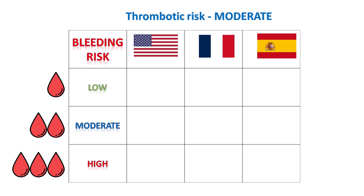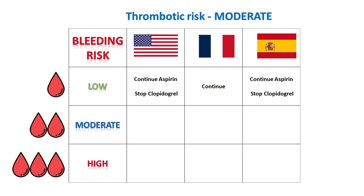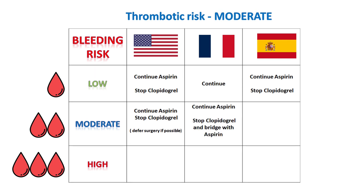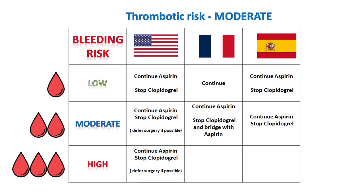In moderate thrombotic risk patients on aspirin or clopidogrel monotherapy for secondary prevention: in low bleeding risk, American suggests continuing aspirin and stopping clopidogrel; French says continue aspirin or clopidogrel as monotherapy; Spanish says continue aspirin but stop clopidogrel. In high bleeding risk, Americans suggest continuing aspirin, stopping clopidogrel, and deferring surgery if possible. The French protocol says continue aspirin, and if the patient is on clopidogrel monotherapy, stop it and bridge with aspirin. The Spanish protocol suggests stopping clopidogrel but continuing aspirin unless it is intracranial neurosurgery.